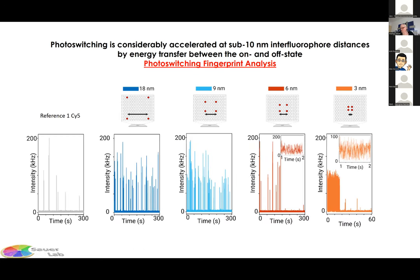On a confocal single-molecule microscope: the reference shows typical Cy5 blinking; 18 nm shows more blinking with 4 fluorophores; for 6 and 3 nm, we see super-fast blinking during the first few seconds, then no blinking. Can we demonstrate this is energy transfer? This should be reflected in the donor lifetime. Lifetime measurements of DNA origami for 18, 9, 6, and 3 nm distances: for a 3 nm origami, recording trajectory and intensity during the first seconds, the energy transfer is reflected directly in a quenched donor lifetime of about 600–700 picoseconds.